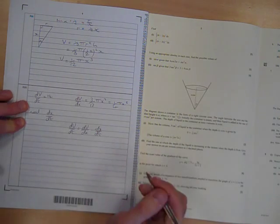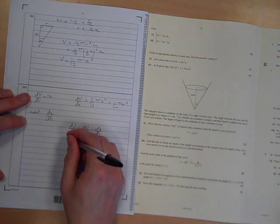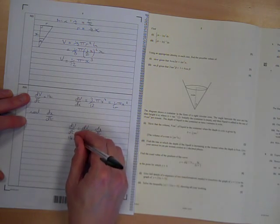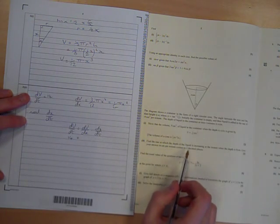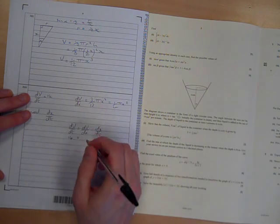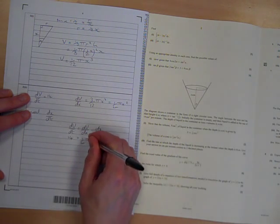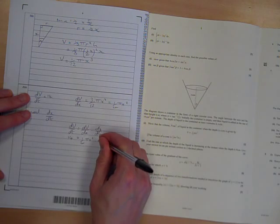which gives us that 14 is dv by dx, 1 quarter pi x squared times dx by dt.